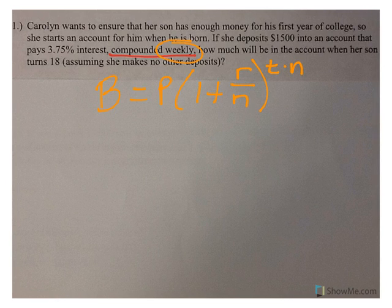Now, if you're compounding weekly, there are 52 weeks in a year, so we know that n equals 52. Principle is how much you start with, so we have a $1,500 principle, rate is the 3.75%, and our person is turning 18.